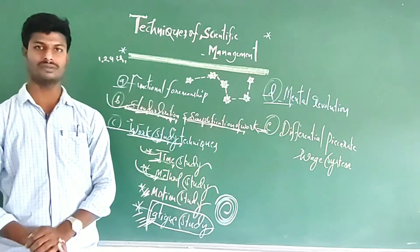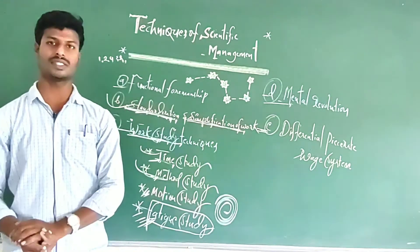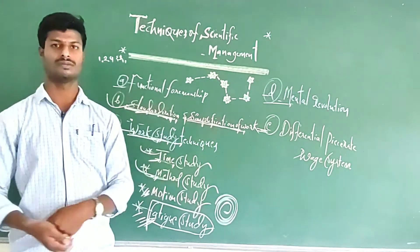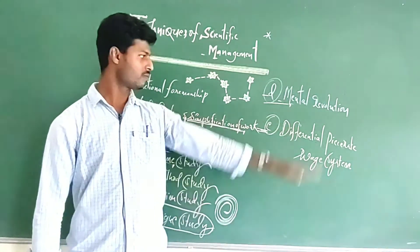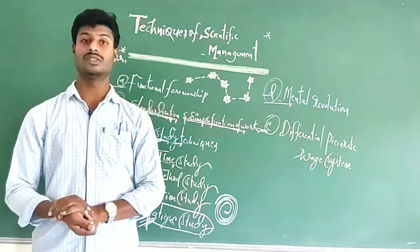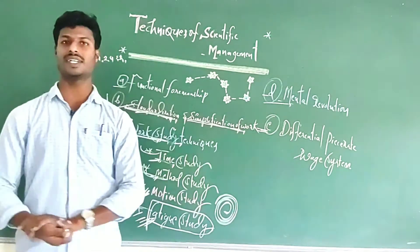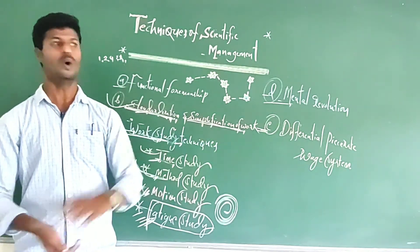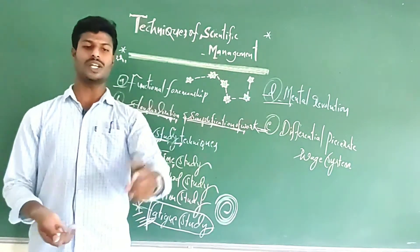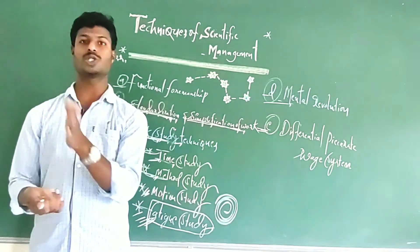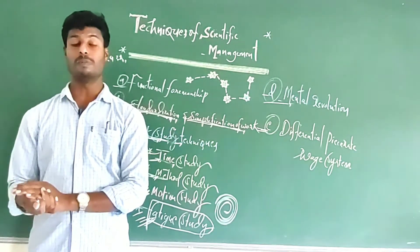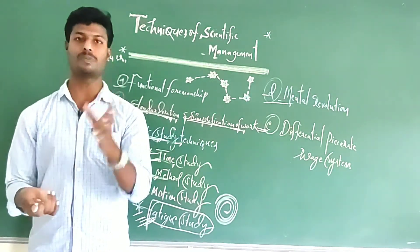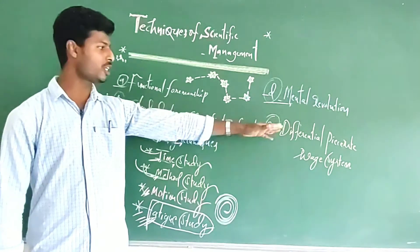The last technique is the differential piece rate system, propounded by FW Taylor, the father of scientific management, to minimize labor cost. Earlier there was a time rate system; to overcome this, Taylor introduced the differential piece rate system. This means paying wages to the employee based on their output — how much they produce is how much they get.